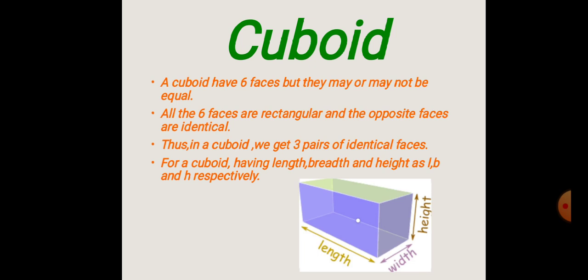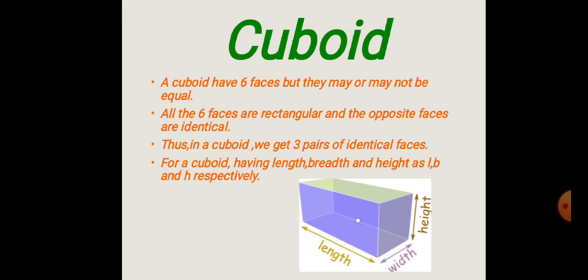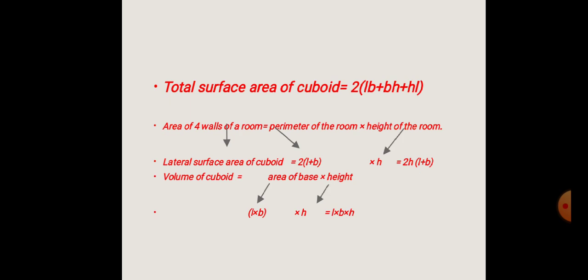For a cuboid having length L, breadth B, and height H, we can find the total surface area. Since all 6 faces are rectangular and opposite faces are identical, taking 2 as common, the formula is: Total Surface Area = 2(LB + BH + HL), meaning 2 multiplied by length × breadth plus breadth × height plus height × length.